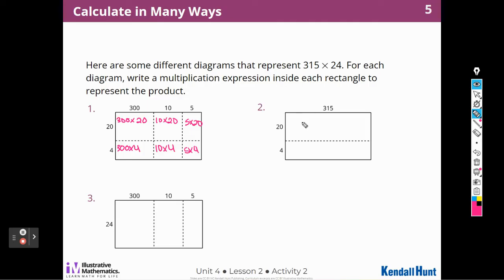For number 2, I would have to do 20 times 315, or 315 times 20, whichever way you wanted to write it. And then I would have to do 315 times 4, or 4 times 315. And then, of course, I have to add all those products together. So I would have to add the answer to this to this. For this one, I would do 300 times 24. This one, I would do 10 times 24. And this one, I would do 24 times 5. And then I would have to add all of those together.